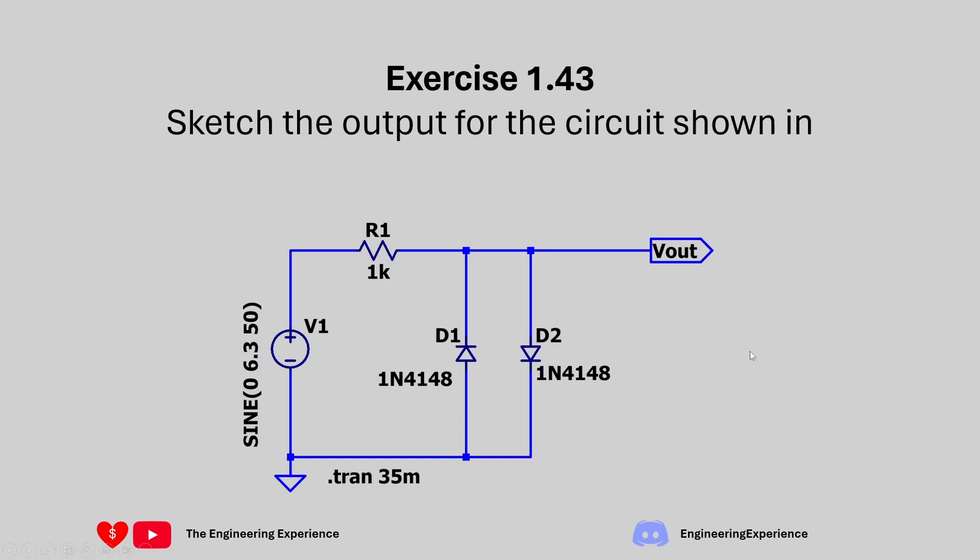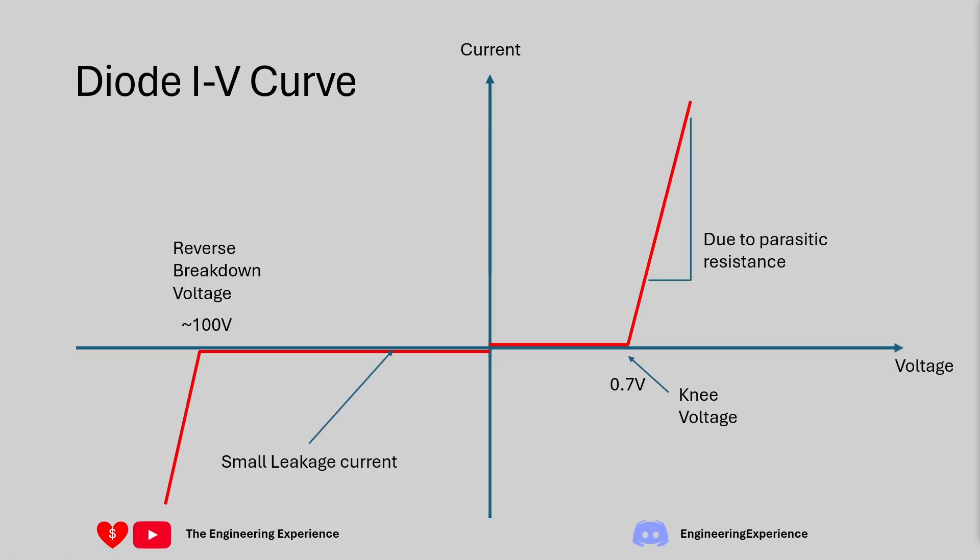So in order to answer this question first of all we need to understand the characteristics of a diode. So on the screen now you've got a forward and a reverse characteristics or the IV curve for a diode. So essentially a diode lets a current flow in one direction and blocks current flowing in the other direction up to a limit.